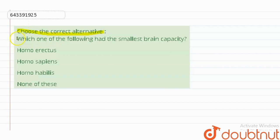correct alternative: which one of the following had the smallest brain capacity? So first of all is Homo erectus.